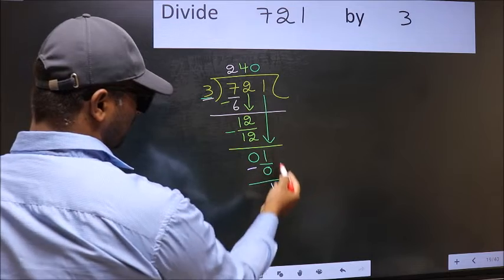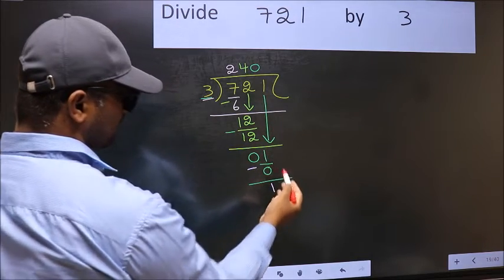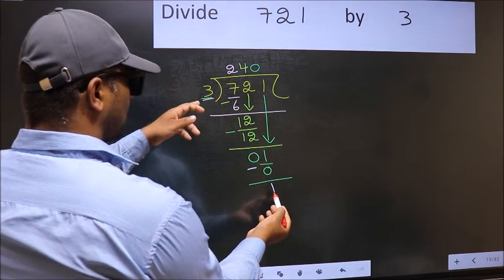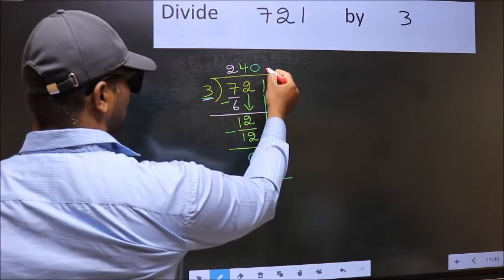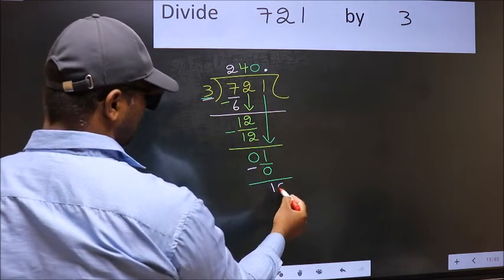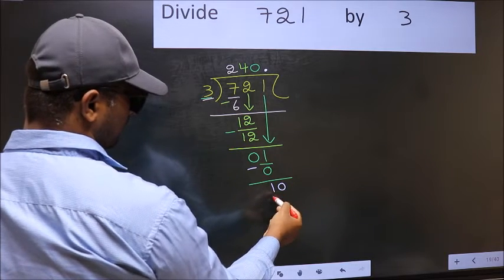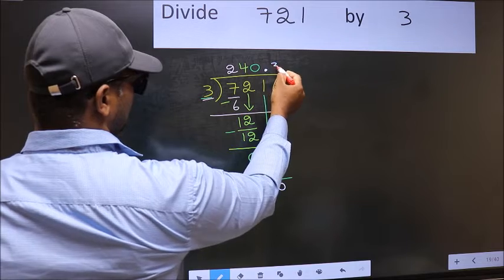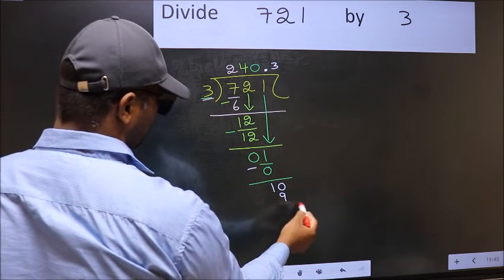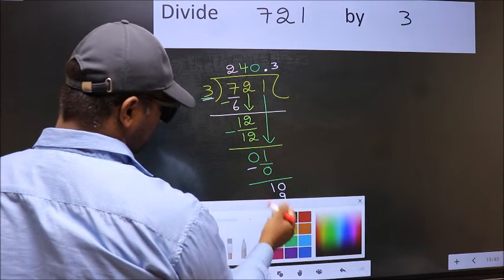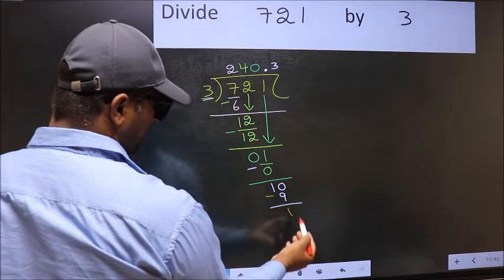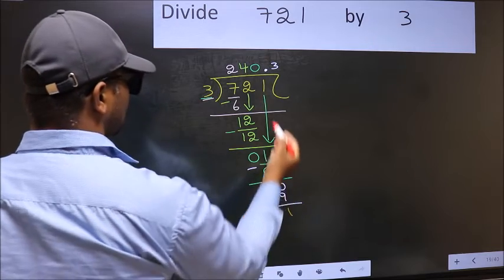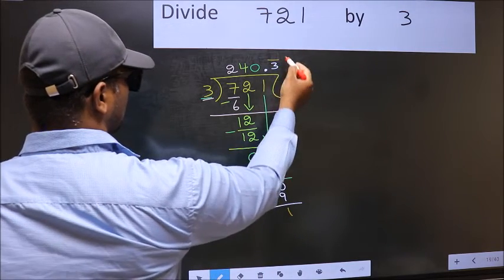Over here, we did not bring any number down. And 1 is smaller than 3. So now you can put a dot and take 0. So 10. A number close to 10 in 3 table is 3 3s, 9. Now you should subtract, 10 minus 9, 1. We got 1 again. That means we get bar on this number.